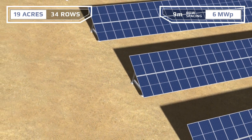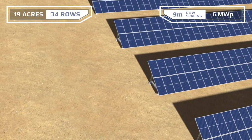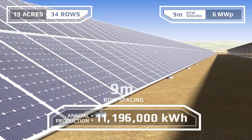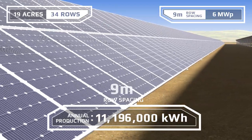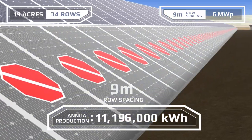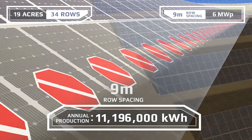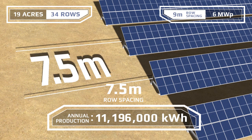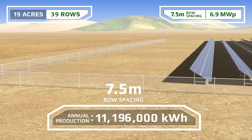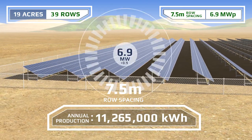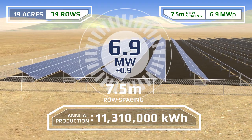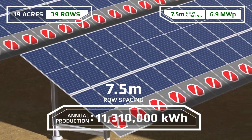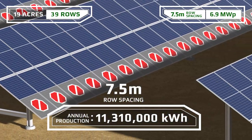Our competitors can still only tolerate the 9 meter spacing we saw before. Notice that at the beginning and end of the day, shading from the adjacent row knocks out power production from an entire row of modules. But with KOO modules' better shading tolerance, the system design is optimized at 7.5 meter spacing. Now we can fit 39 rows of modules in the same parcel for 6.9 megawatts total. At the beginning and end of the day when shading occurs, the top halves of the modules are still producing power, even when the bottom halves are partially shaded.